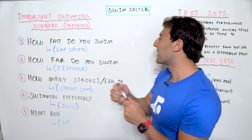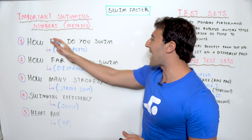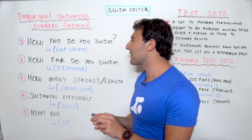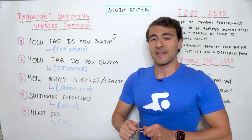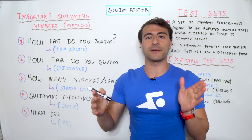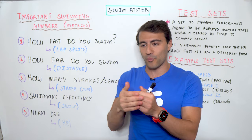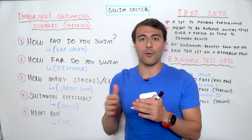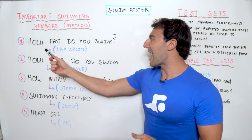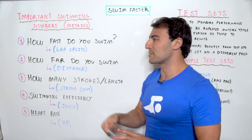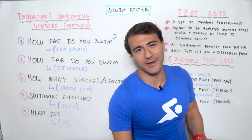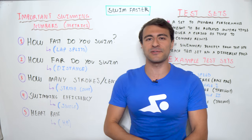How fast do you swim? We're talking about lap splits. It's really important to know what distance we're talking about — over a 25-meter, 50-meter, or 100-meter distance. This is probably the most obvious one, whether you're a competitive swimmer or just swimming for fitness.